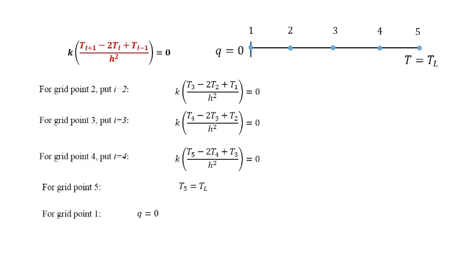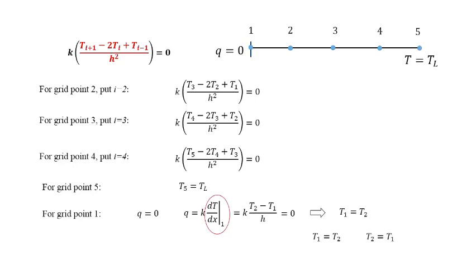For boundary node 1, the adiabatic condition q=0 means k · dT/dx at node 1 equals zero. Using the forward difference formulation, this becomes k·(T2 − T1)/h = 0, which leads to T1 = T2. Note that while T1=T2 and T2=T1 are mathematically the same, they differ in computer code implementation. In total, we have five equations and five unknowns (T1 through T5), so we can solve the system — demonstrating the basic implementation philosophy of the finite difference method.